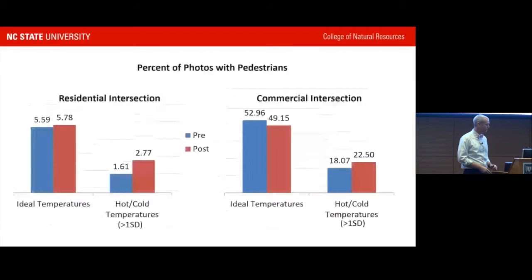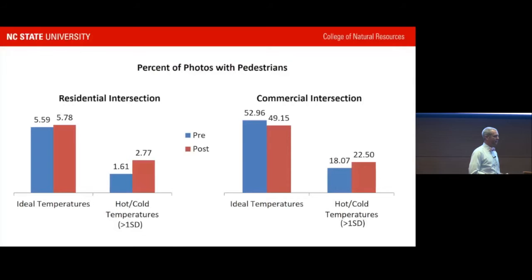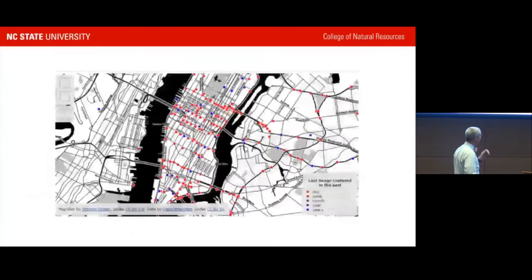Looking at the percent of photos with a pedestrian during ideal temperature versus outside one standard deviation, there was a significant increase in pedestrians after the crosswalk was added during non-ideal conditions. They're still working on precipitation data, but preliminary results from one camera suggest that when it rains, more people are out when crosswalk visibility is better — which makes intuitive sense but is hard to capture with only a single pre-post study design.